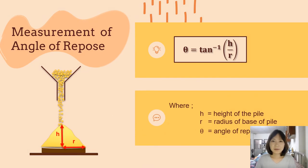Now let's look at the measurement of angle of repose. First step: measure the height of the pile and the radius of the base. Then substitute into the equation: theta equals arctan(h divided by r), where h is the height of the pile, r is the radius of the base of the pile, and theta is the angle of repose.